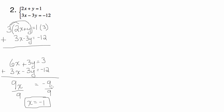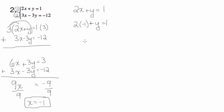Now I need to solve for y. I'll plug x equals negative 1 into equation 1, which is 2x plus y equals 1. So 2 times negative 1 plus y equals 1, which is negative 2 plus y equals 1. Add 2 to both sides, and I end up with y equals 3.